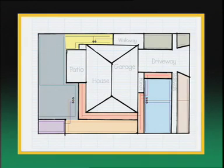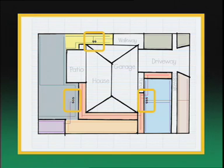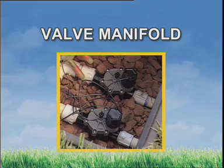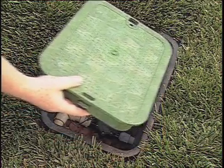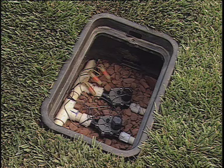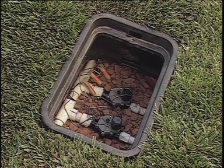As a matter of efficiency, it's better to group several valves together assigned to a common area, such as the front or backyard, for example. This arrangement is known as a valve manifold. Each valve is still connected to its own group of sprinklers, but it takes less pipe and other materials if several are located in one valve box.